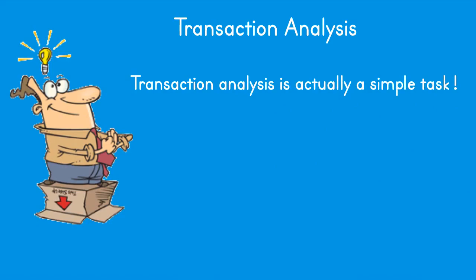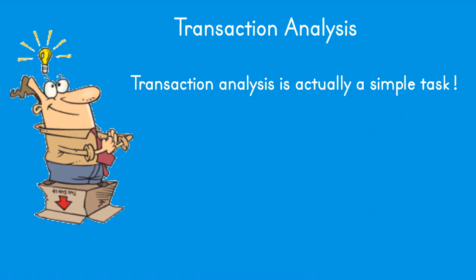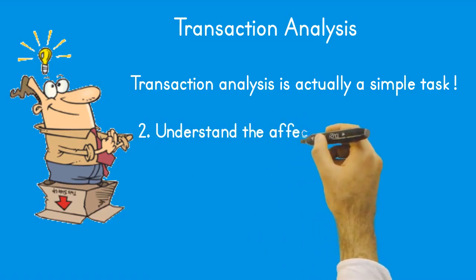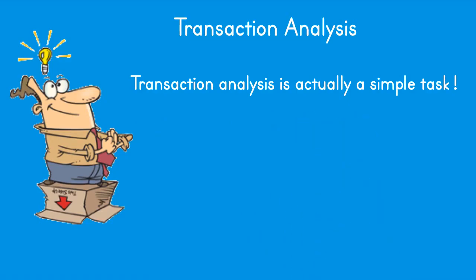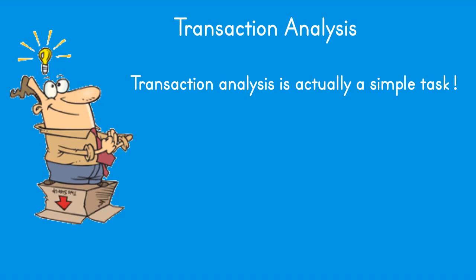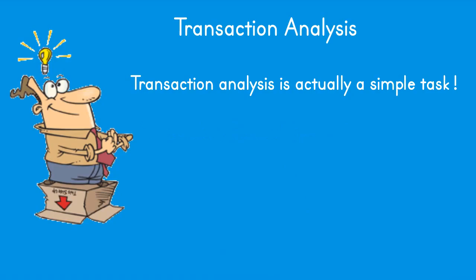Transaction analysis is a simple task that with experience a bookkeeper performs without thinking about it. The seven steps are: 1. Recognize that a transaction has occurred and identify source documents. 2. Understand how it affects the business and whether it needs to be recorded. 3. Determine what accounts are affected and whether the balance increases or decreases. 4. Use the chart of accounts to find account numbers. 5. Use debit and credit rules to determine debits or credits. 6. Determine what journal to use. 7. Record the transaction.